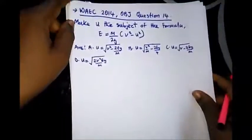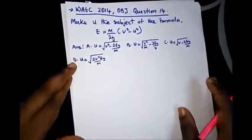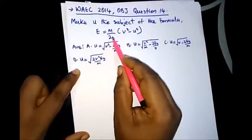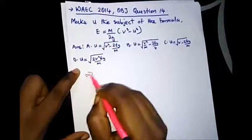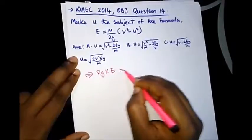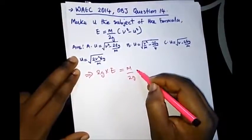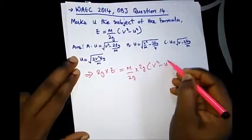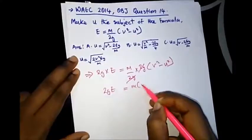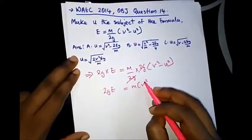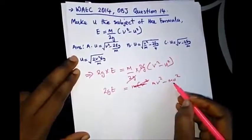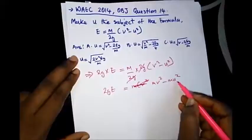The next question is from WAEC 2014 OBJ question 14. It says: make U the subject of the formula. Let's try to remove what is in the denominator to make things easier. By doing that, let's multiply both sides by 2G. So we have 2G multiplied by E equal to M over 2G multiplied by 2G bracket V squared minus U squared. This cancels, and we are left with 2GE equal to M bracket V squared minus U squared. We are making U the subject of the formula.